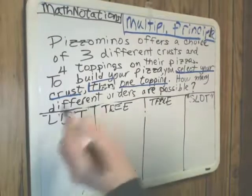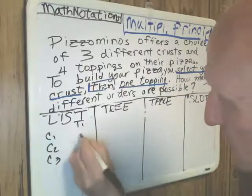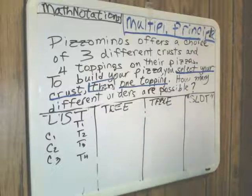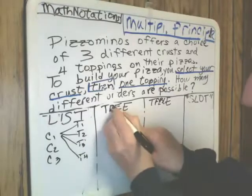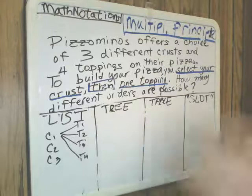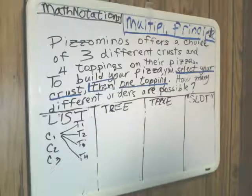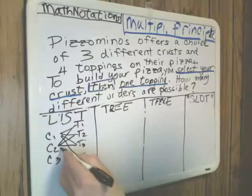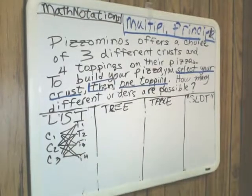So we're going to use C1, C2, C3 for the three crusts and T1 through T4 for the four different toppings. One way we could show the different possibilities is a crisscross diagram. It's easy to do it for that first crust and it looks like the tree model that we're going to get to in a moment. But if you continue doing this, it gets sloppy and messy, and if there were more choices, this method would not be practical. So crust two could be associated with any one of four toppings, and the same with crust three.